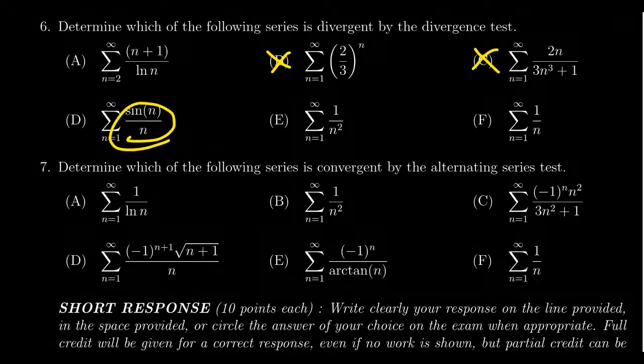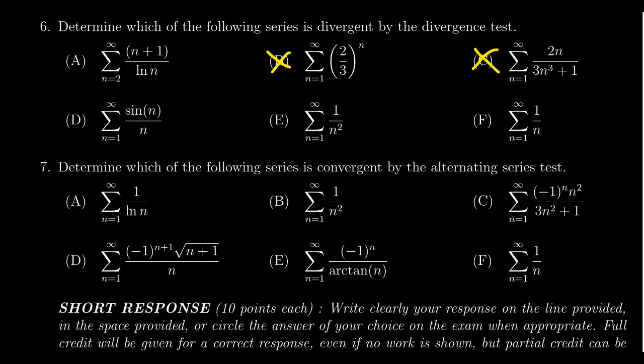Over here, sine of n over n. Well, sine is going to keep on going back and forth between 1 and negative 1. As n gets bigger, that thing is going to go down towards zero. So that sequence converges to zero. If the series is convergent, don't know, don't care.